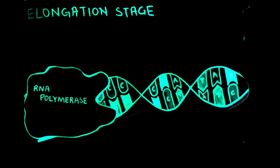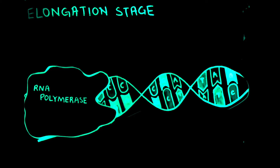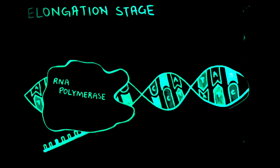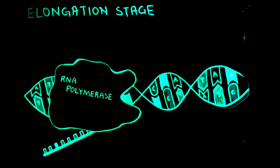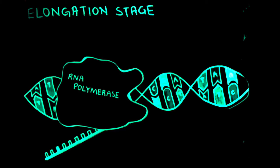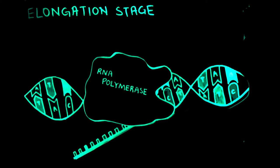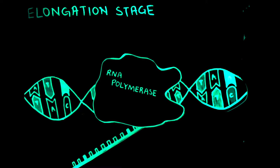During the elongation stage, the RNA polymerase moves along the length of the template DNA strand and uses it as a template to create a single strand of mRNA. As it moves along, it undoes the unwinding and closes the DNA, keeping only 10 to 20 base pairs exposed at a time.